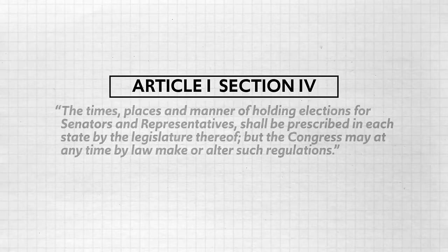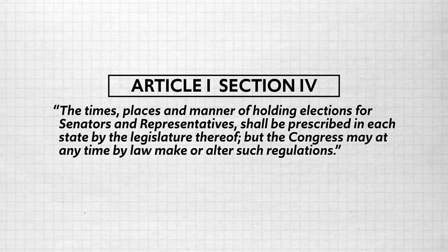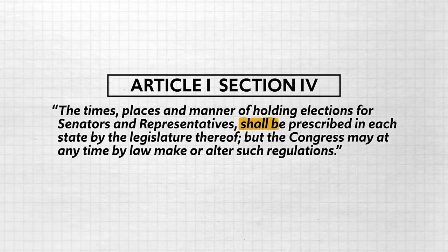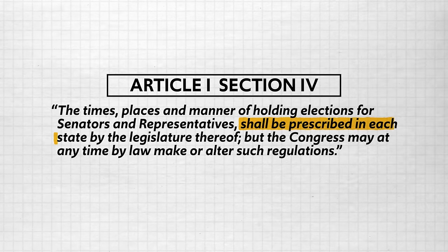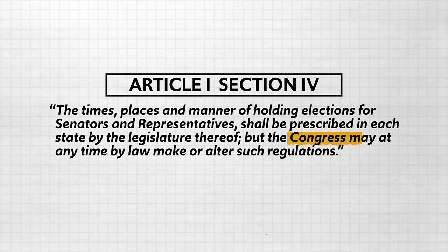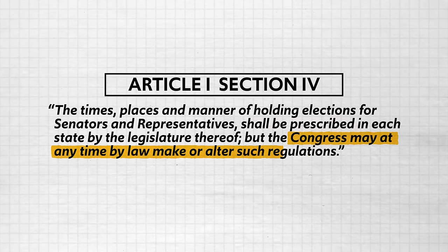In Article 1, Section 4, it says this about voting: 'The times, places, and manner of holding elections for senators and representatives shall be prescribed in each state by the legislature thereof. But the Congress may at any time, by law, make or alter such regulations.' In other words, the Constitution doesn't say who has the right to vote and who does not. That was a decision left up to the states.